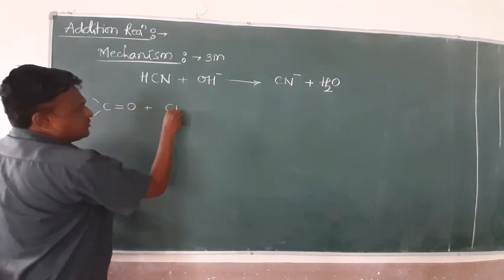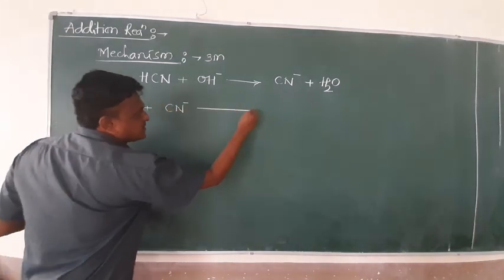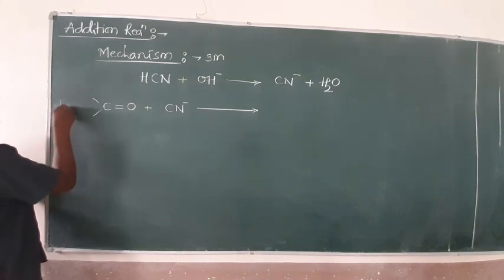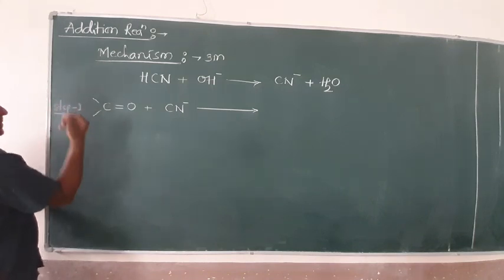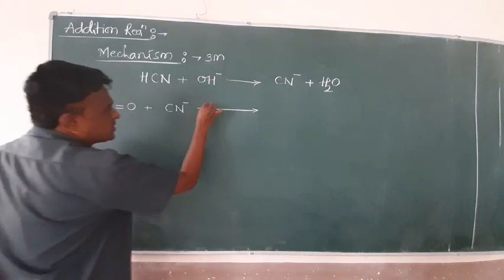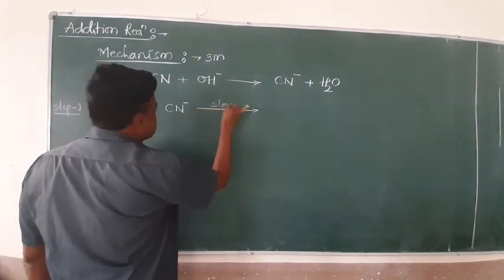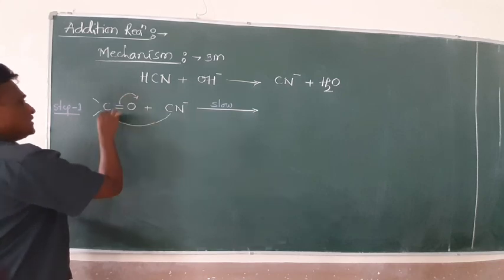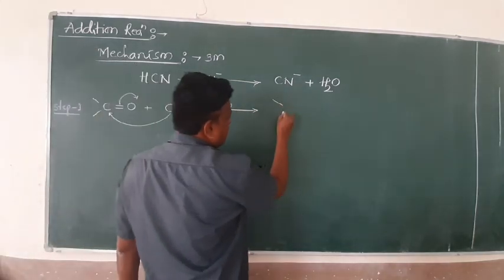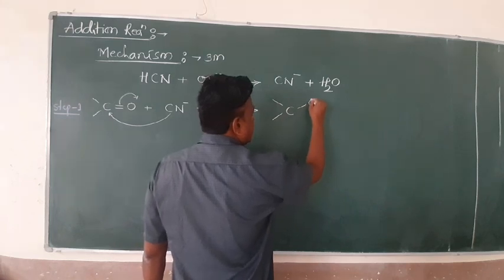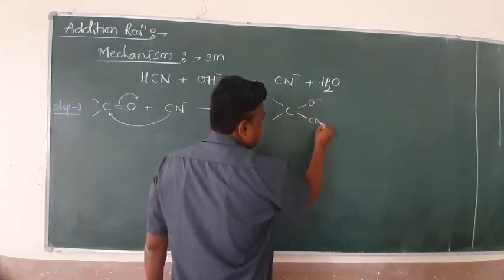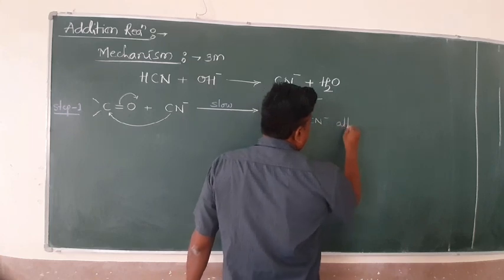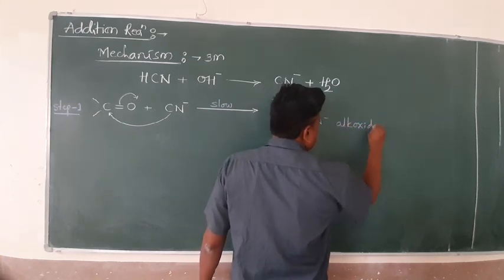Consider either aldehyde or ketone. When it reacts with CN⁻, Step 1 is a very slow step. In this step, CN⁻ attacks the carbonyl carbon, forming an intermediate where C is bonded to O⁻. The name of this compound is alkoxide anion.